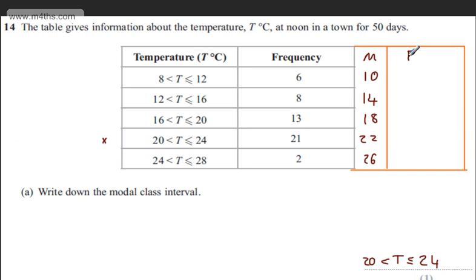We now do the frequency times the midpoint. We're going to have 6 times by 10, that gives me 60. We're going to have 8 times by 14, which is going to give us 112. We've got 13 times by 18, which is going to give me in total 234.